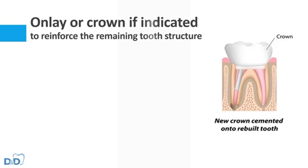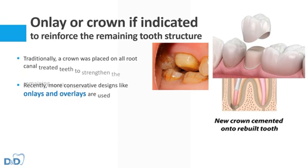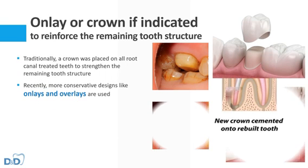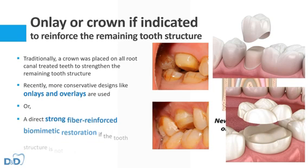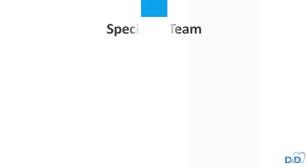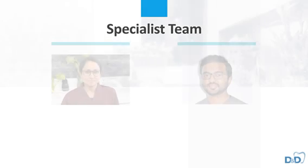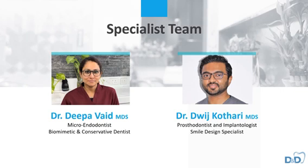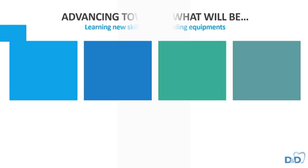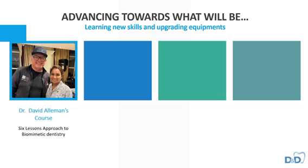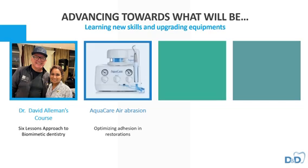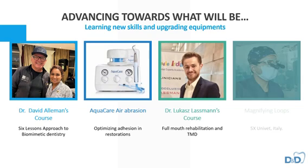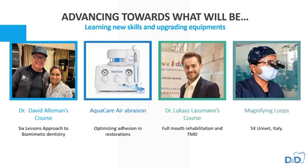An onlay or crown, if indicated, may be given after the whole root canal treatment is over. So this is all about root canal procedures and the advances in it. Thank you for watching the video. Please like it if it has been helpful, and subscribe to our channel for many more such educational videos. Namaste.